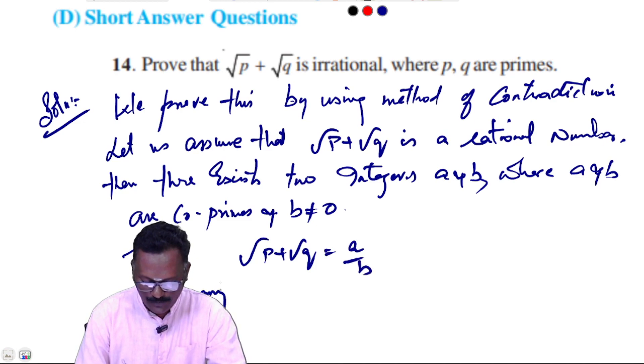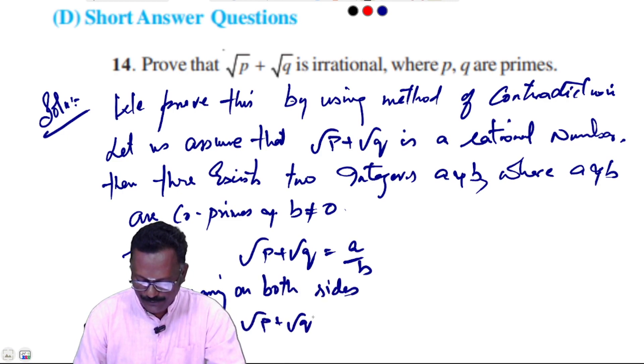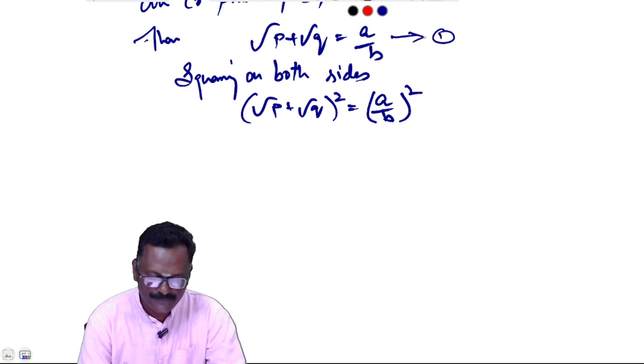Now squaring on both sides, (√p + √q)² = (a/b)². This is equation 1. Using (a + b)² formula to open it.